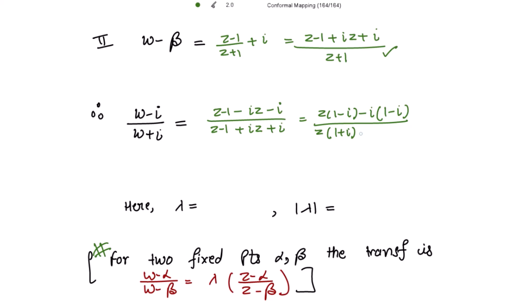So from here, taking 1 minus iota common, we get 1 minus iota into z minus iota. And taking 1 plus iota common, we get 1 plus iota into z plus iota.